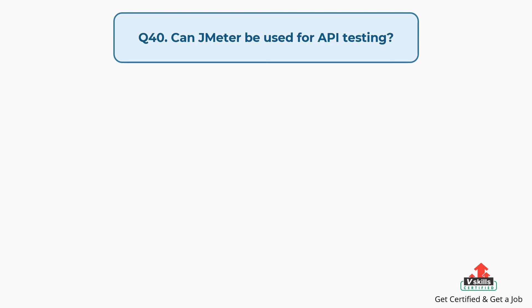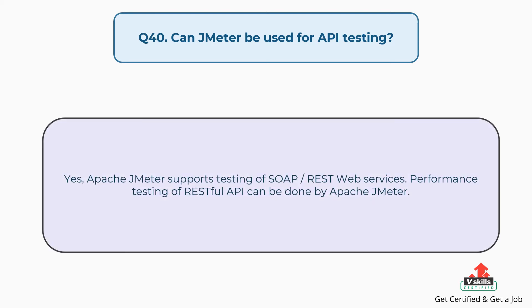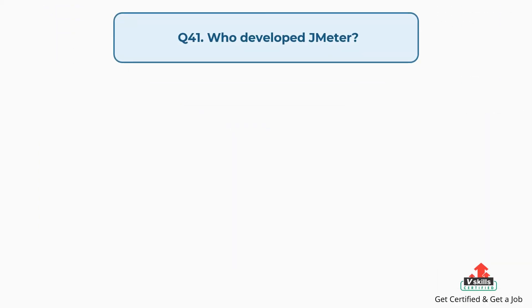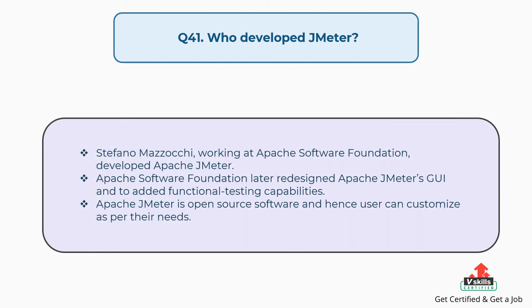Question 40: Can JMeter be used for API testing? Yes, Apache JMeter supports testing of SOAP and REST web services. Performance testing of RESTful APIs can be done with Apache JMeter.